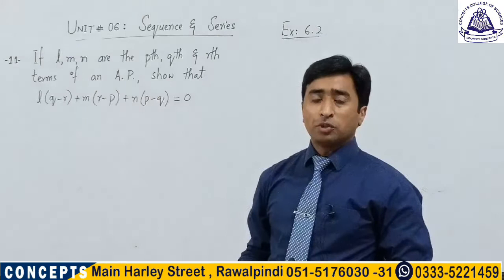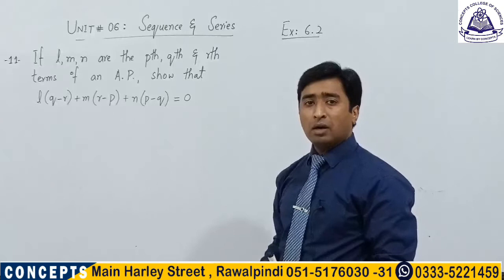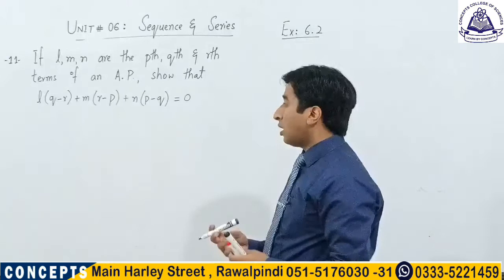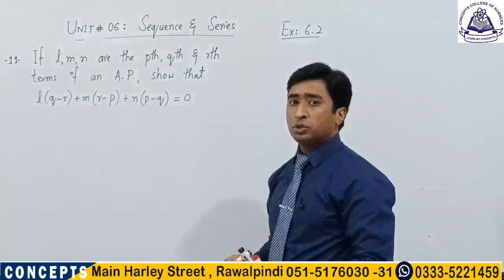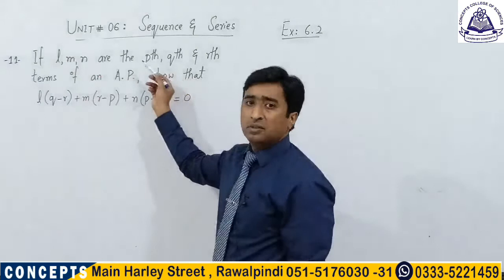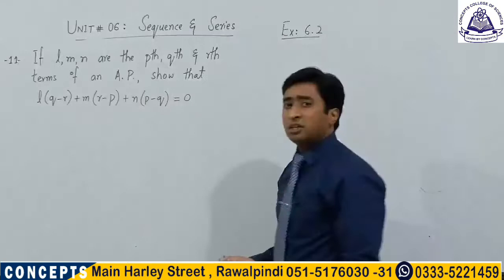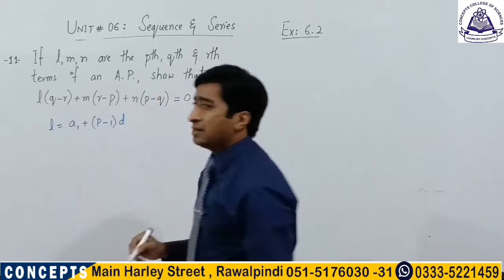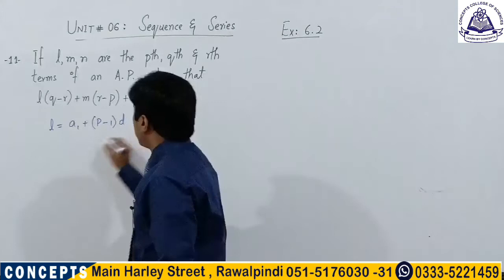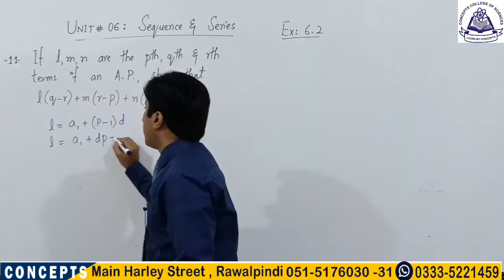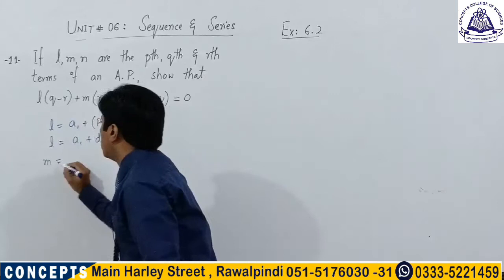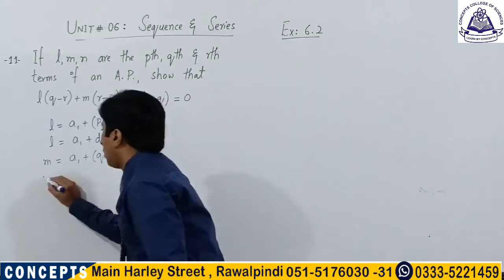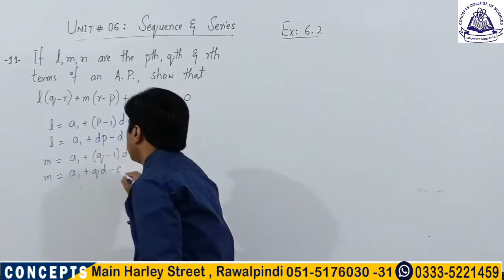Next question: If l, m, n are the pth, qth and rth terms of an arithmetic progression, show that l·(q − r) + m·(r − p) + n·(p − q) = 0. Since l is the pth term, we write l = a1 + (p − 1)·d = a1 + dp − d (equation 1). Similarly, m = a1 + (q − 1)·d = a1 + qd − d (equation 2).